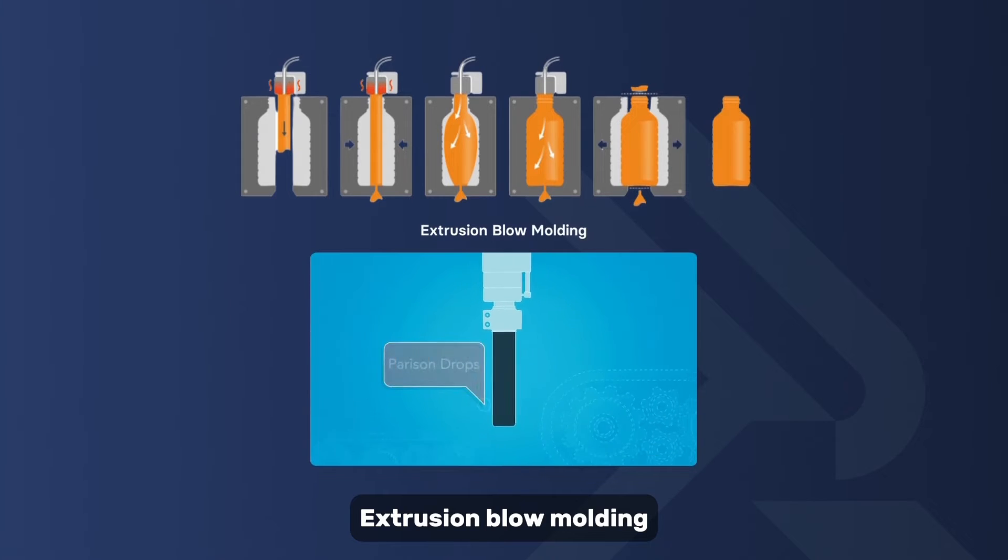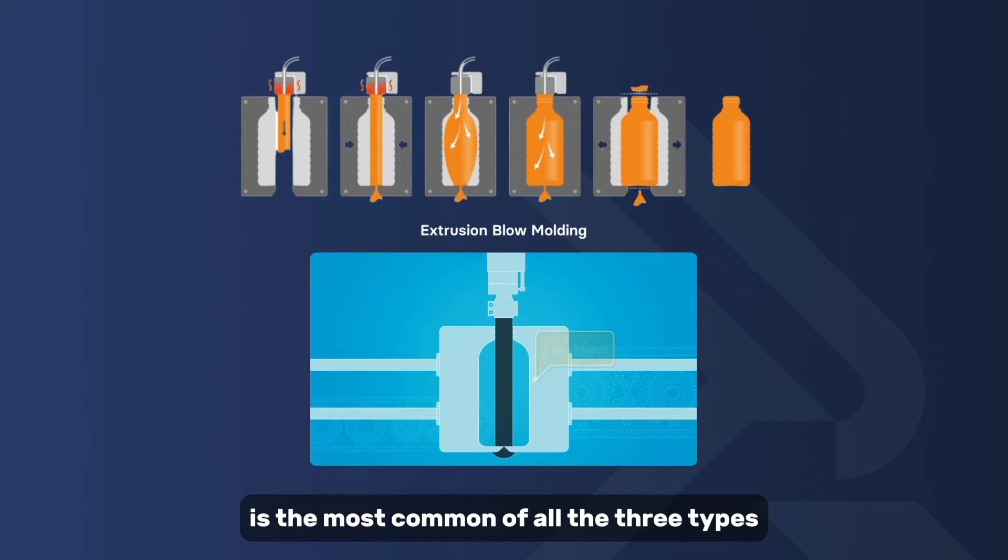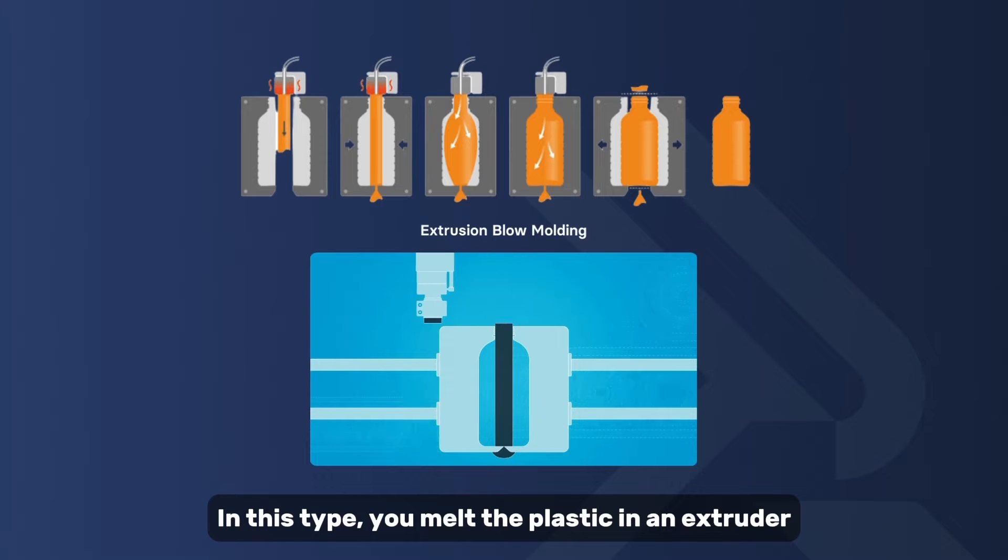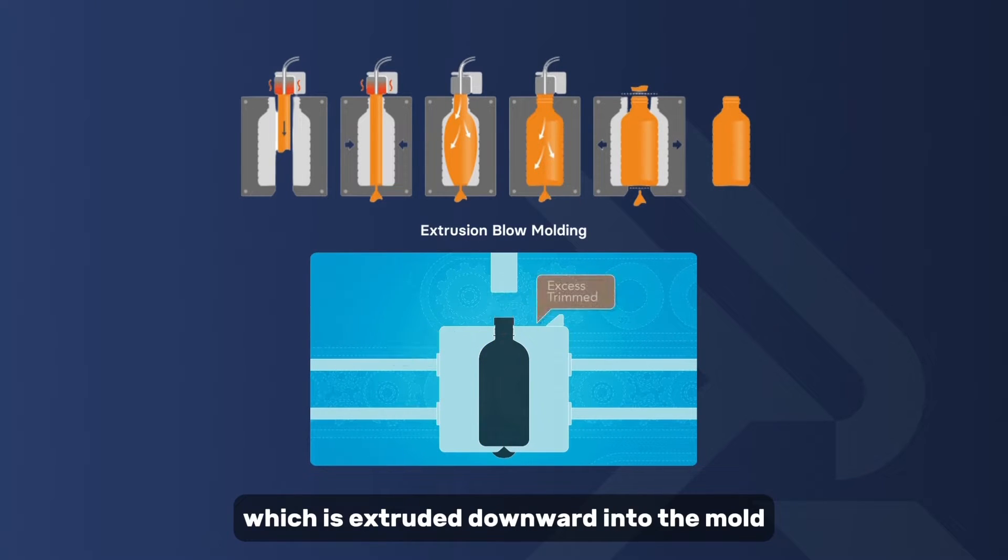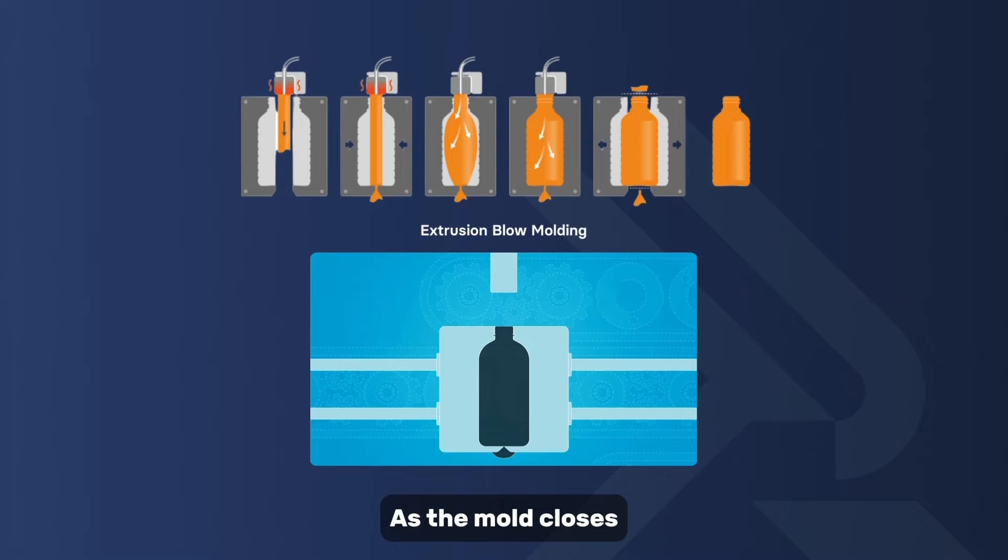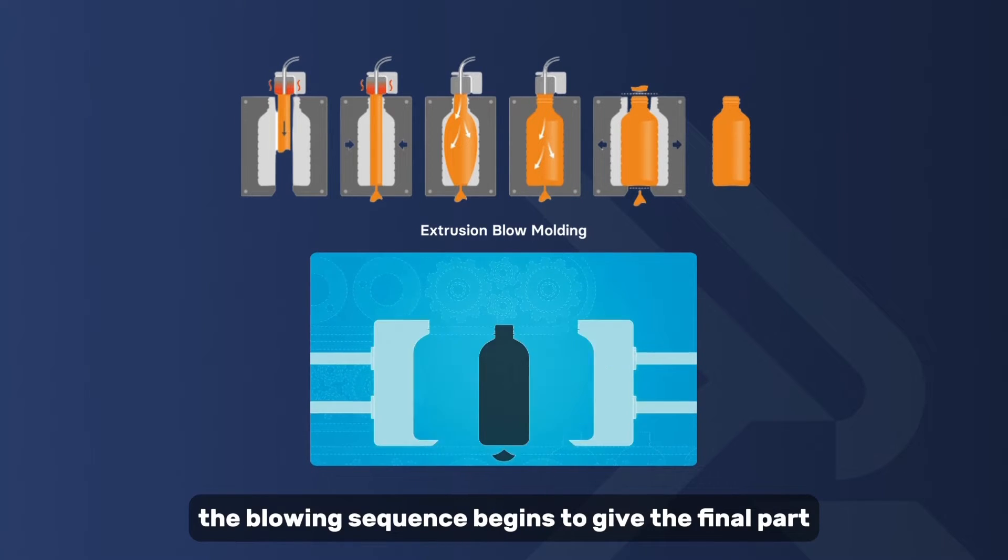Extrusion blow molding is the most common of all three types. In this type, you melt the plastic in an extruder to form the parison, which is extruded downward into the mold. As the mold closes, the blowing sequence begins to give the final part.